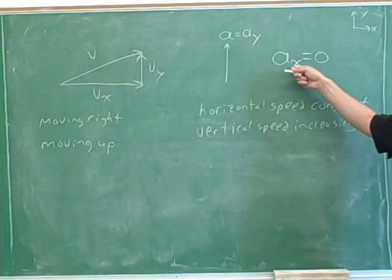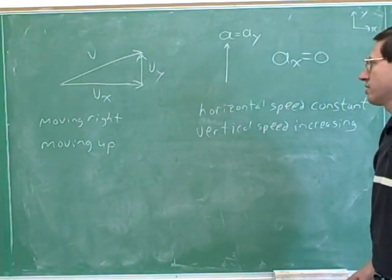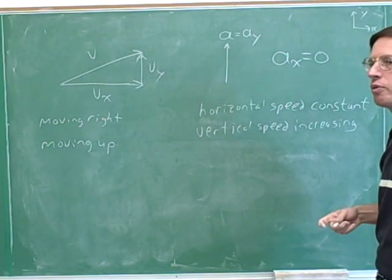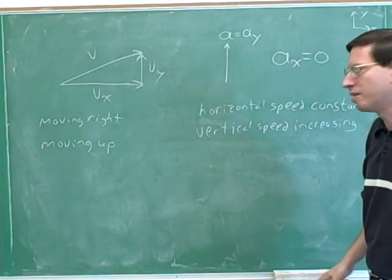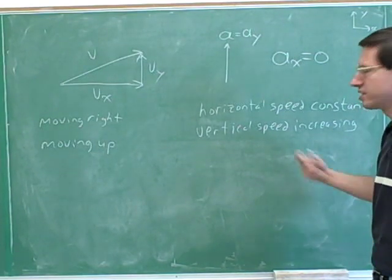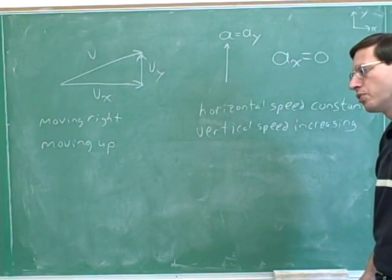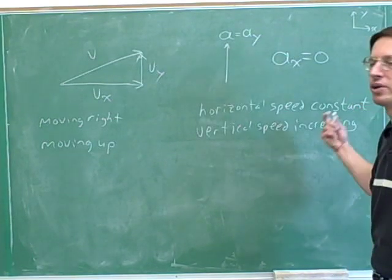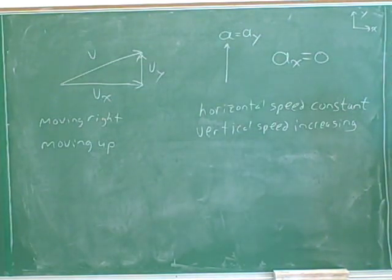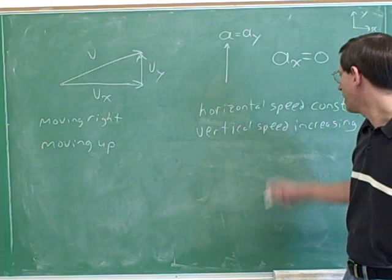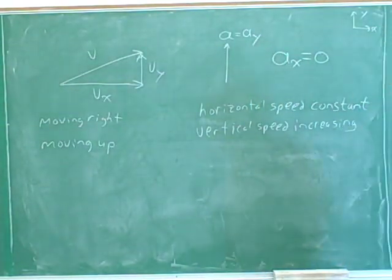Here's a reminder of how to interpret a zero acceleration. In the past we usually thought of the overall acceleration being zero, but now we just have one component that's zero. If your x component of the acceleration is zero, then your horizontal speed is constant. If your y component of the acceleration is zero, then your vertical speed is constant. And if both components were zero, then your overall speed would be constant. So this object is moving to the right at constant speed and simultaneously moving up with increasing vertical speed.